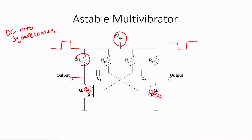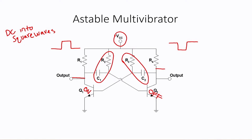Now let's look at transistor Q2, the transistor that's off. With Q2 off, there's no path for current flow, so R4 isn't going to drop any voltage, which means our output on the collector of Q2 is going to be the applied voltage, or a high. The frequency for the astable multivibrator is based off the component values of C1, R2, R3, and C2 — the C1 and C2 values are equal, and the R2 and R3 values are equal.